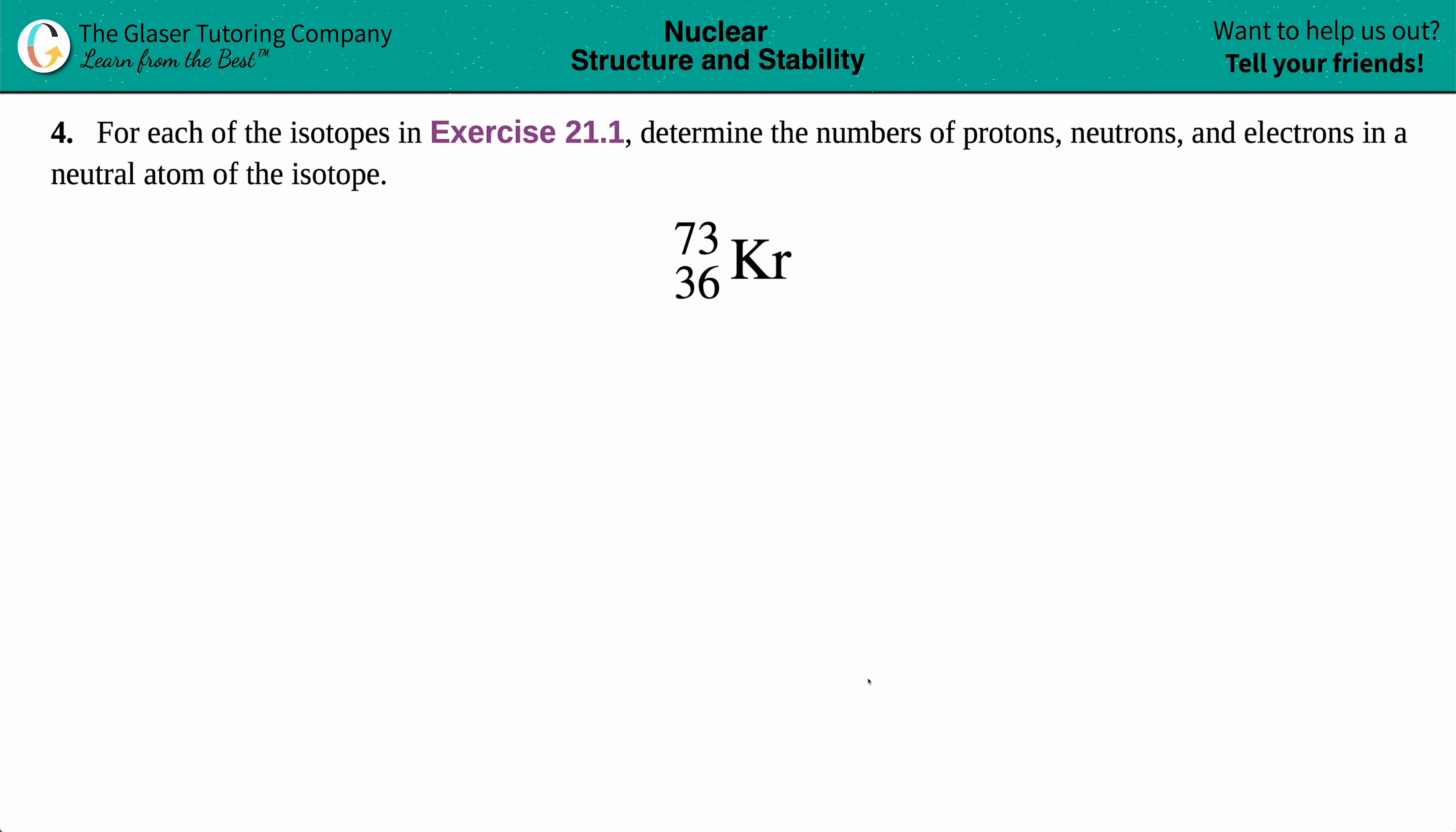Number four: for each of the isotopes in exercise 21.1, determine the number of protons, neutrons, and electrons in a neutral atom of the isotope. Here is one of the examples from exercise 21.1, so we have 73 on the top, 36 on the bottom, and Kr, which is krypton.